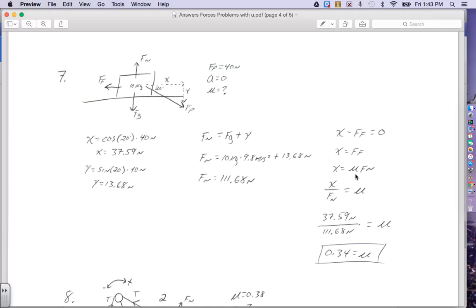Now I can solve for the coefficient very easily by dividing the normal force over to the other side of my equation. So I have X divided by the normal force equals my coefficient. My X force we solved for, it's 37.59 Newtons, and my normal force we solve for is 111.68 Newtons. Once I divide those two, I get the coefficient of 0.34. That's the end of number seven.